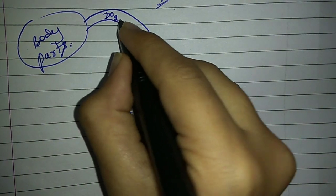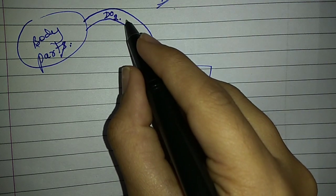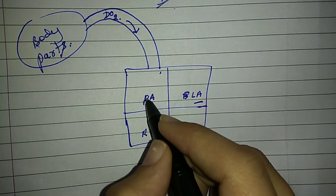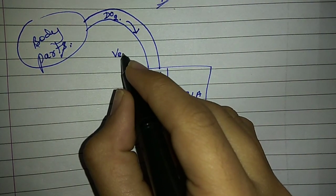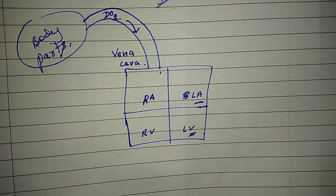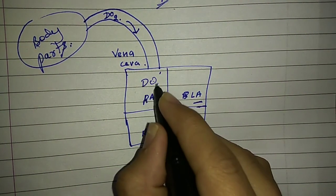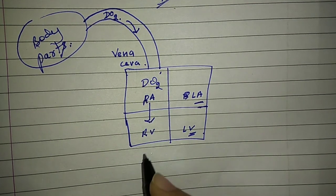Deoxygenated blood from body parts, which has released oxygen and collected carbon dioxide, will come to the right atrium through a vein known as the vena cava. Here comes the deoxygenated blood.